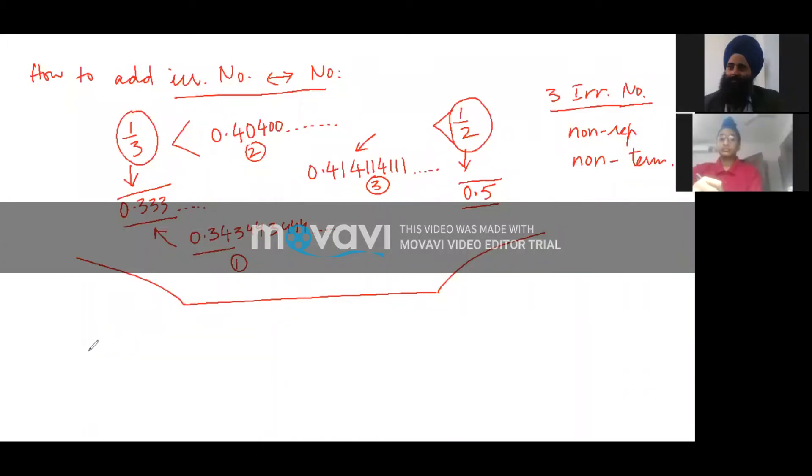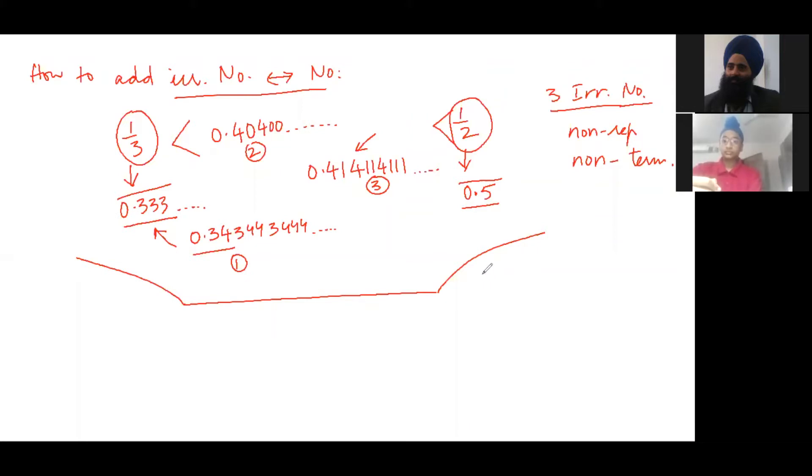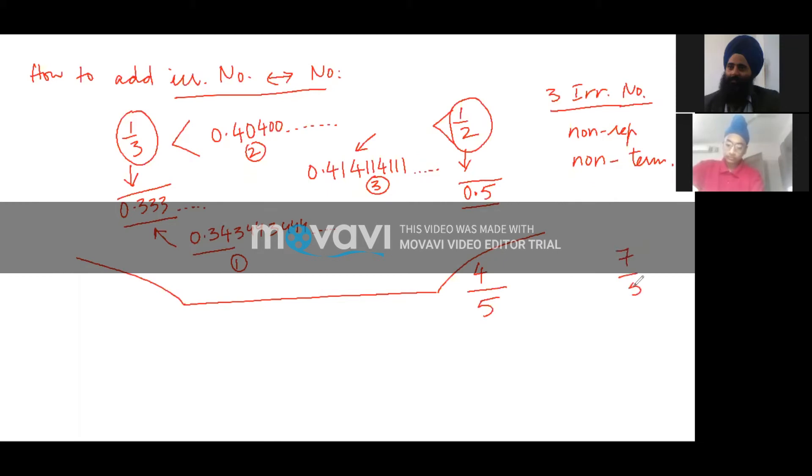Let's say we have one more question about how to add irrational numbers between two numbers. Let's say the numbers are 4/5 and 7/5. The denominator can be different also, no issues.